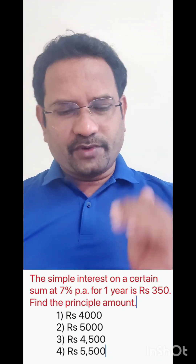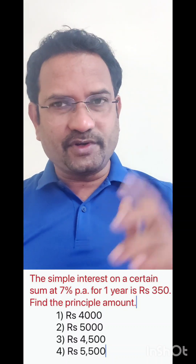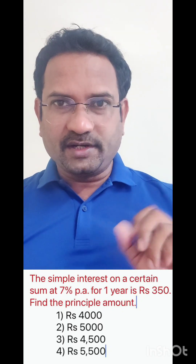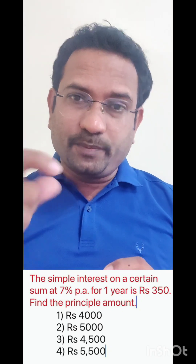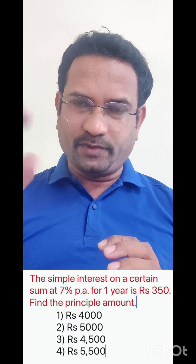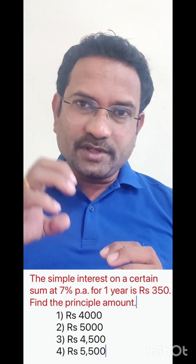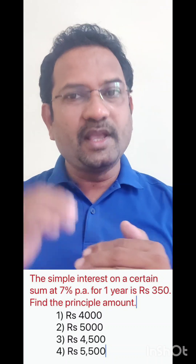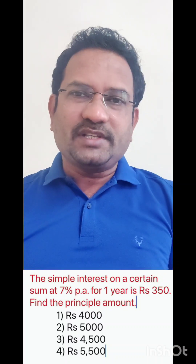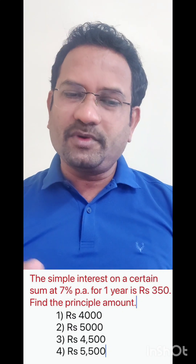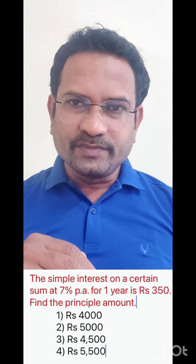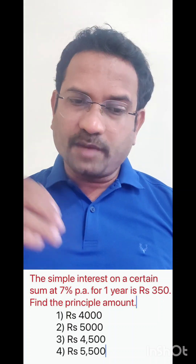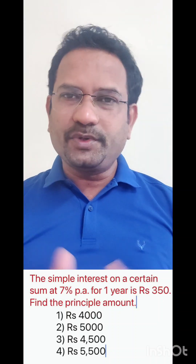For 100 rupees, it is 7 rupees interest. If it is 500, the interest would be 35 rupees. Now the question says the interest is 350 rupees. For 500, the interest is 35 rupees — so if it is 350 rupees interest, it becomes 5,000. If you take 5,000 at the rate of 7% per annum, you will pay 350 rupees. So the question is asking: what is the principal amount? The principal amount is 5,000. Option 2. Look at the options — option 1 is 4,000, option 2 is 5,000, option 3 is 4,500, option 4 is 5,500. Option 2 is the answer.